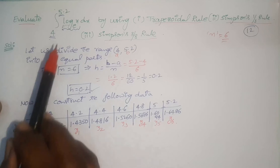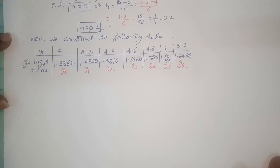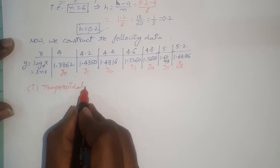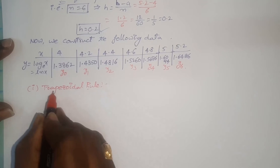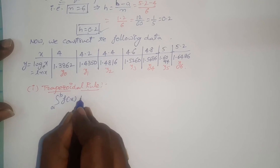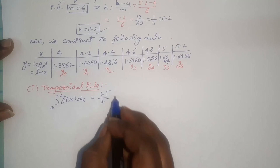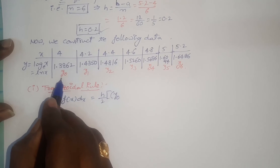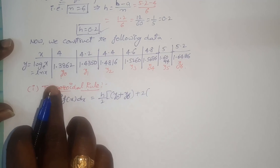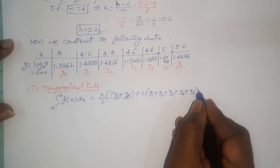We label these as y0, y1, y2, y3, y4, y5, y6. After constructing the data we can easily find the given definite integral using any numerical integration formula. Now applying the trapezoidal rule: according to the trapezoidal rule, the integral equals h/2 into the sum of first and last ordinates (y0 + y6) plus 2 times the sum of all remaining ordinates (y1 + y2 + y3 + y4 + y5).